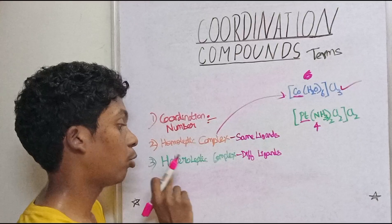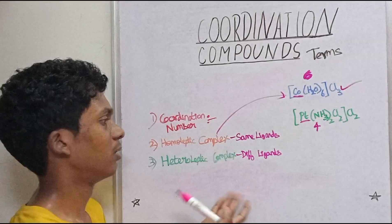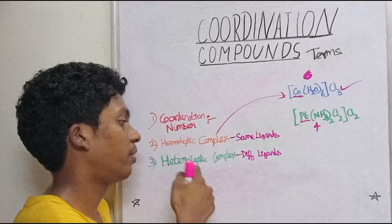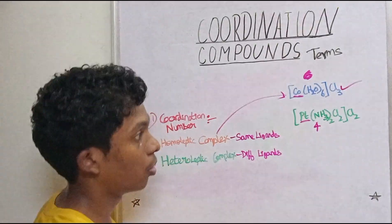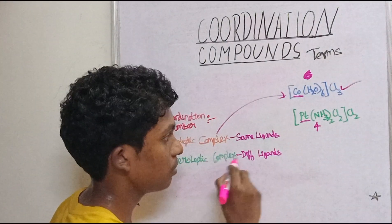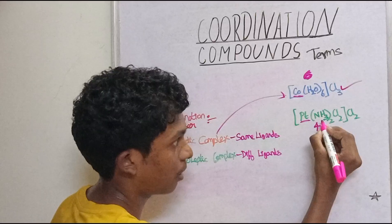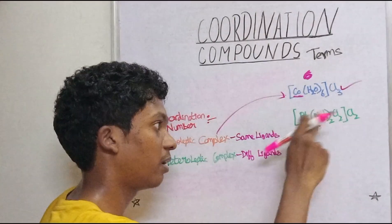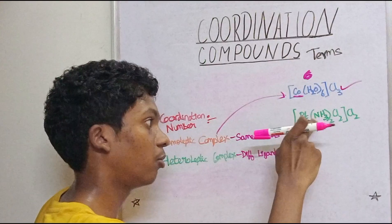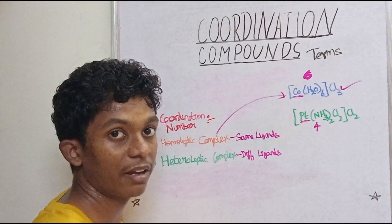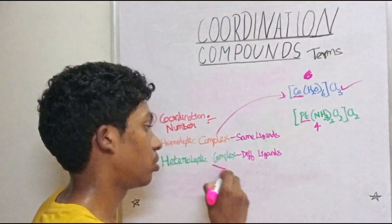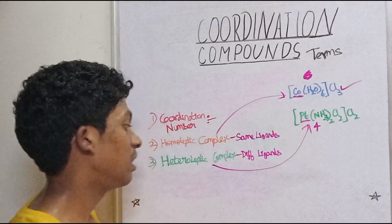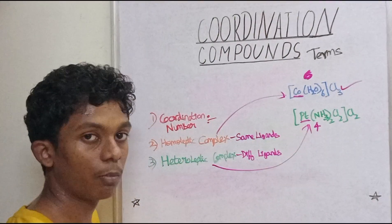The next type is the Heteroleptic Complex. Heteroleptic means different ligands. Homo means same, hetero means different. For example, platinum with 2 ammonia and 2 chlorine has different ligands, so this is a heteroleptic complex.